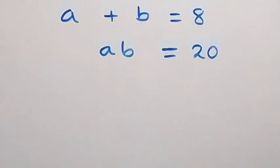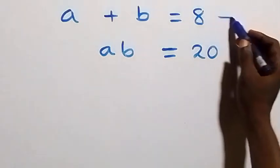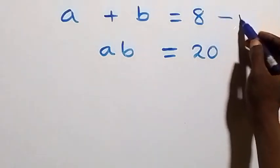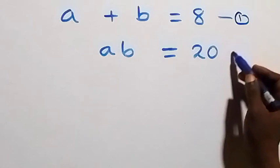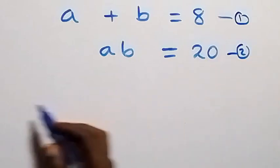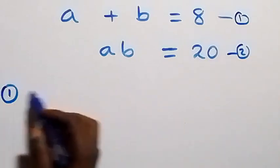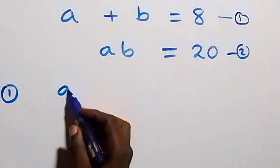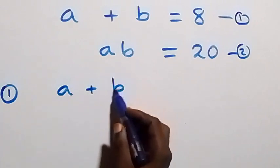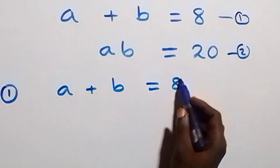Hello, you are welcome. How to solve this nice energy problem. Here let's label this as equation one and this as equation two. From equation one, which is a plus b equals to eight,